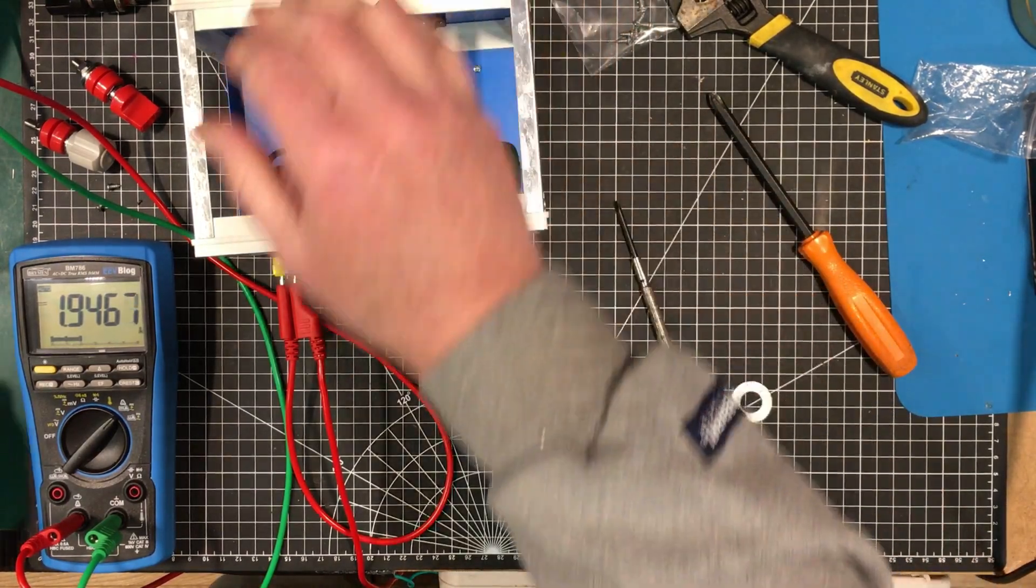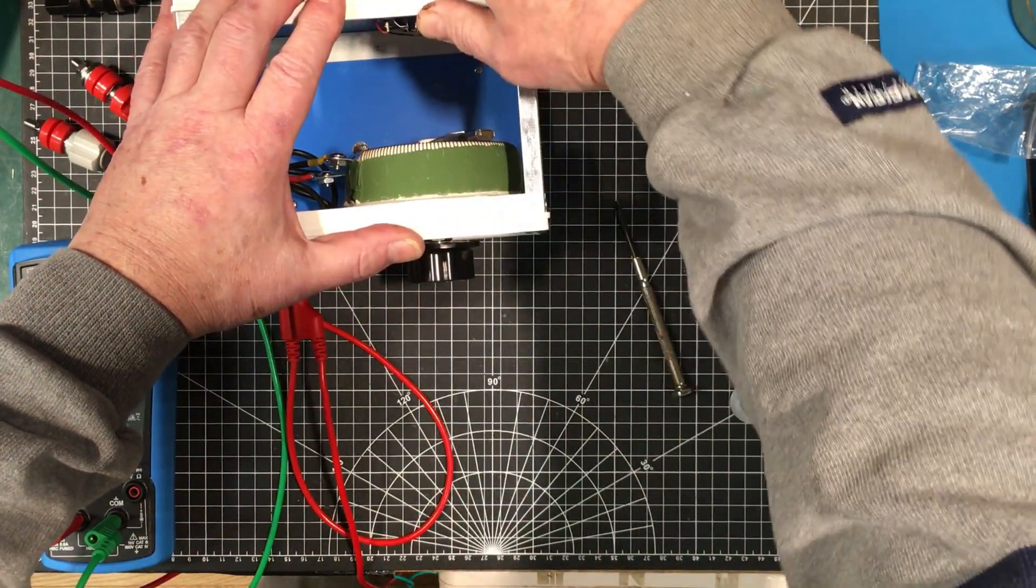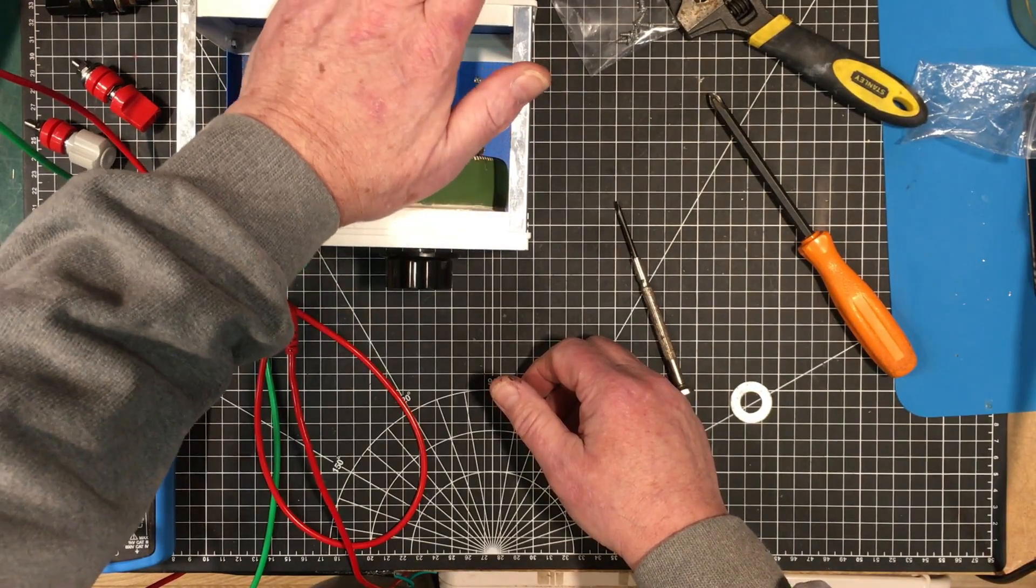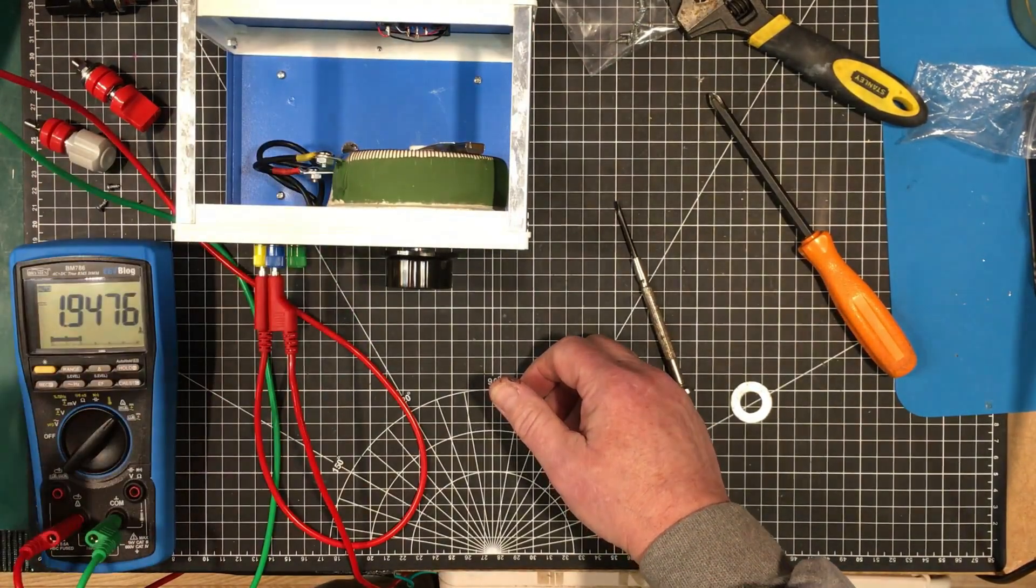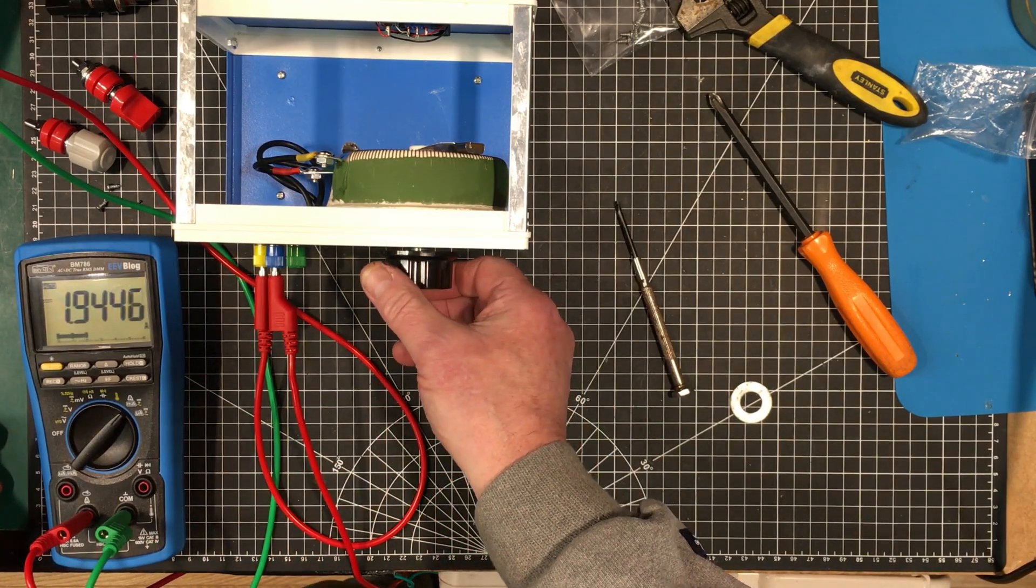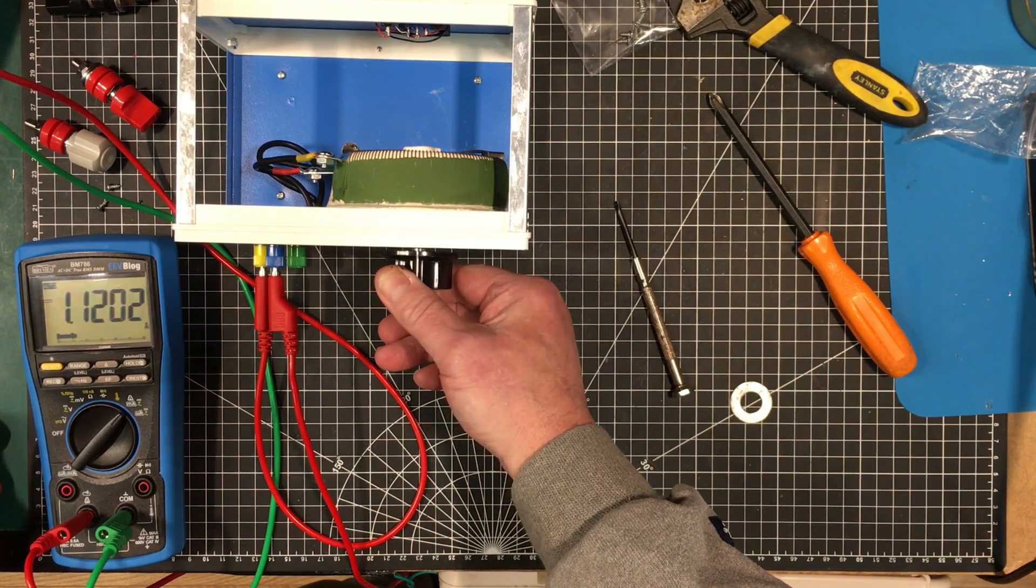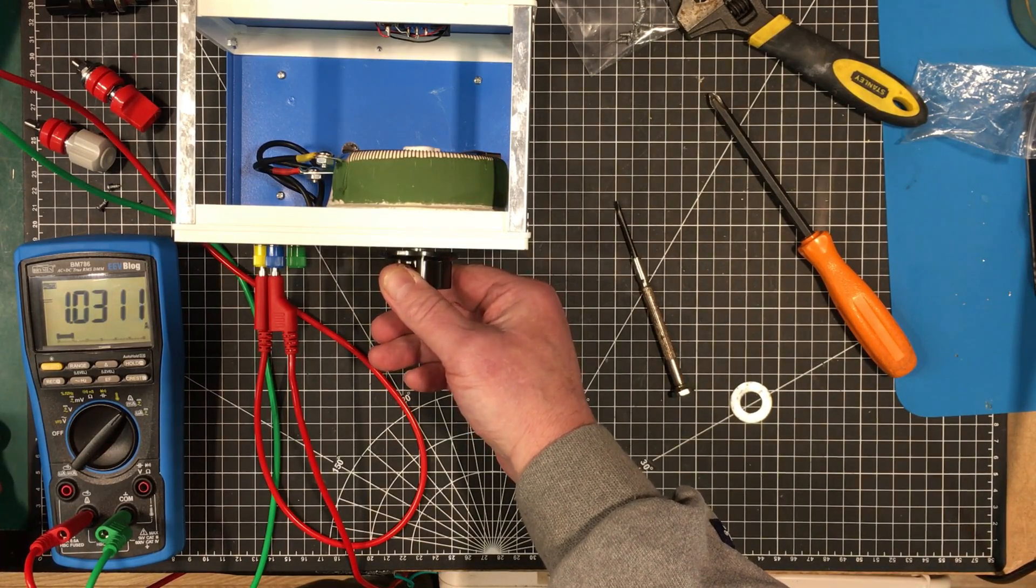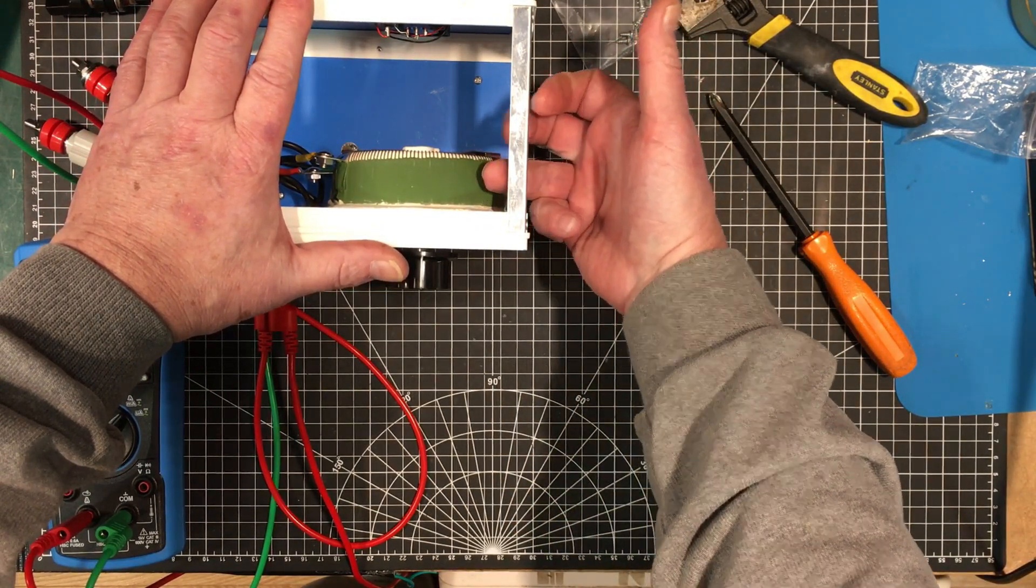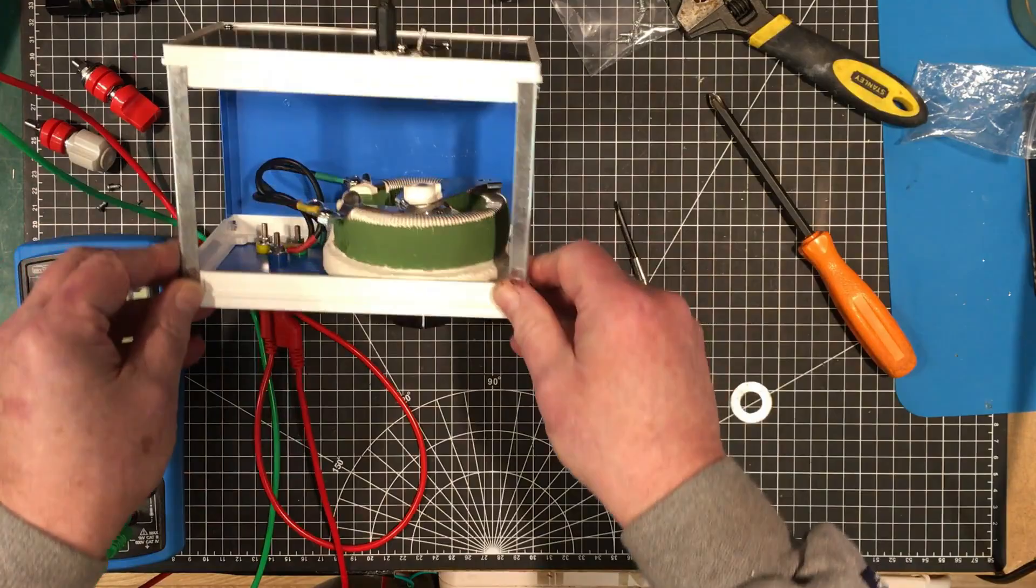Now switch on the fan here. Let's see if that keeps the temperature pretty reasonable. I wouldn't want to keep my hand there for very long. That's one of the reasons I'd like to get an ammeter in it because this 2 amps is really just the maximum here. Let's see if that fan brings the temperature down. Oh yeah it cools it right down.